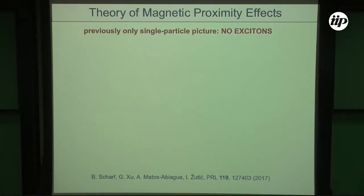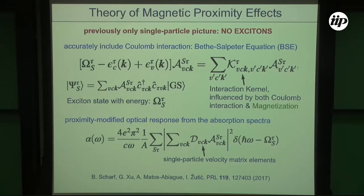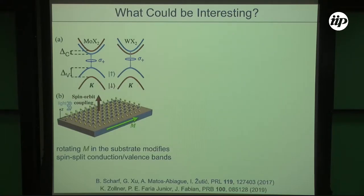We wanted to establish a simple picture of magnetic proximity effects that includes Coulomb interaction and excitons — perhaps the first example in 50 years of studying magnetic proximity effects in materials that does so. We use a relatively standard approach of the Bethe-Salpeter equation, and looking at the kernel there is a possibility that the magnetic substrate will not just affect the single-particle level but may also influence exciton binding energies. From this approach one can study various observables such as absorption spectra.